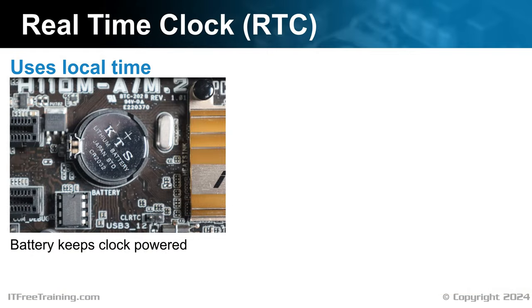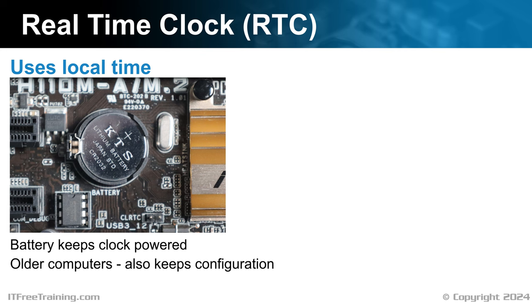The computer has a real-time clock, otherwise known as RTC. If the power is disconnected, a battery on the motherboard will keep providing power to the clock. On older computers, the battery also kept the computer's configuration powered. In modern computer systems, configuration settings are stored in non-volatile flash memory, which preserves the configuration without the need for a power supply, ensuring the computer retains its configuration even when powered off.